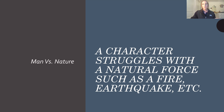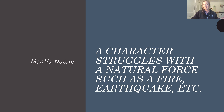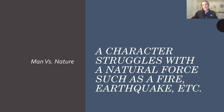The last type we really see in this book is man versus nature — a character struggling with a natural force such as fire, earthquake, or any sort of weather. At the middle-end of the book, when we see Eliezer and his father going on their death march into the abandoned towns in freezing weather and snow, and them dealing with that — that's man versus nature.